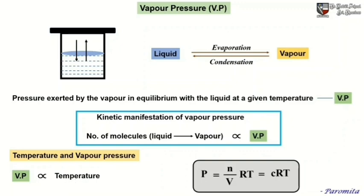Now how are vapor pressure and temperature related? Vapor pressure is directly proportional to temperature. As we increase the temperature, the kinetic energy of the liquid molecules also increases, meaning there is a greater tendency for the liquid molecules to escape to the vapor phase, so vapor pressure increases. From the equation P = (n/V)RT = CRT, we can confirm that vapor pressure and temperature are directly proportional.